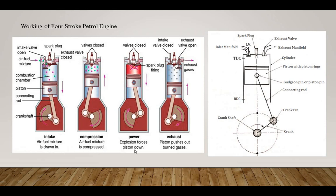Next is the power stroke, where the explosion forces the piston in a downward stroke. During this stroke, the inlet and exhaust valves remain closed, and the piston moves from top dead center to bottom dead center. High pressure and temperature gases push the piston down to create motive power. In the exhaust stroke, the inlet valve is closed and exhaust valve is open. The piston moves from bottom dead center to top dead center, pushing out the burnt gases from the cylinder. The exhaust valve closes at the end of this stroke.